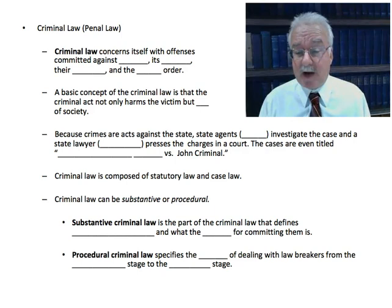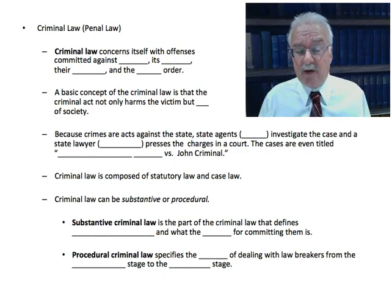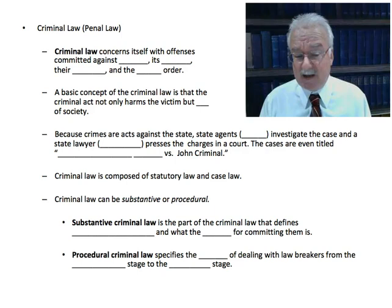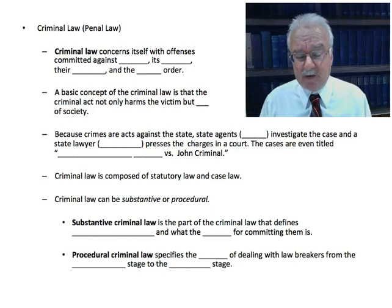Criminal law can be composed of statutory law and case law. Statutory laws are the written codified laws that say what is illegal, what the penalties are, and also mention defenses. Case law, as covered, consists of past rulings of judges interpreting statutory law. Criminal law can also be substantive or procedural. Substantive criminal law defines what acts are illegal and what the penalties are — crimes like rape, murder, arson, and theft — with a precise description of what you must do to be found guilty, and the penalty.